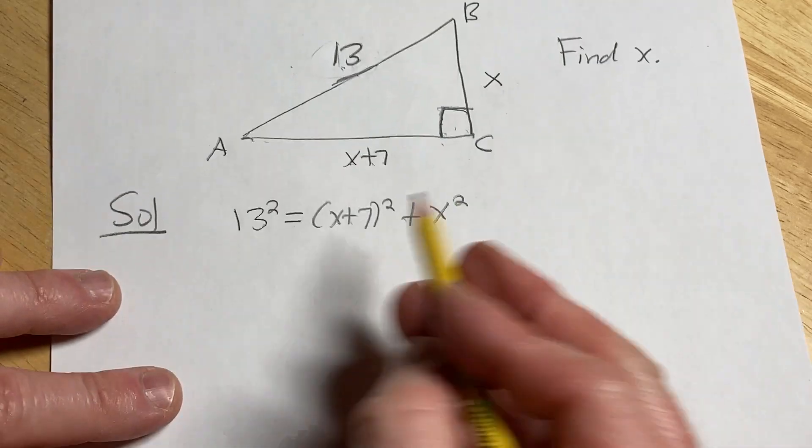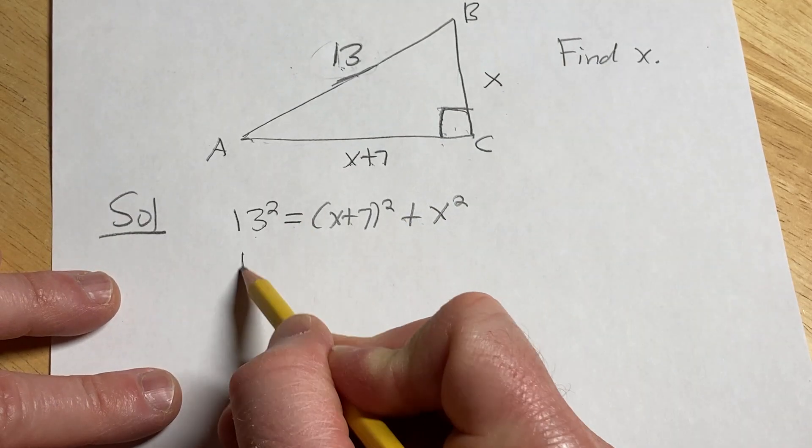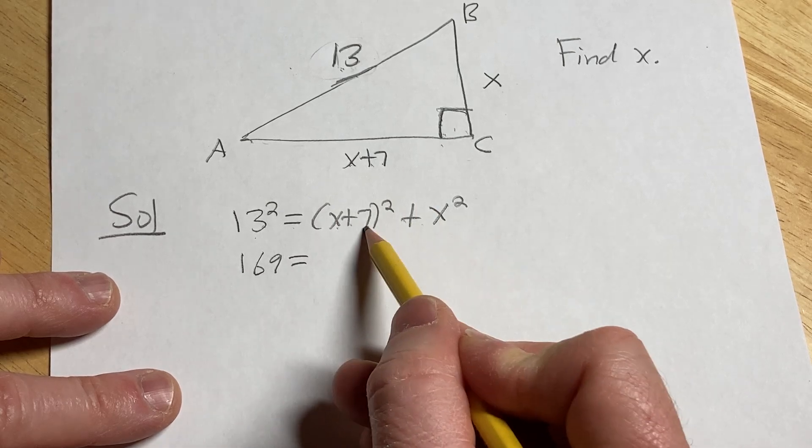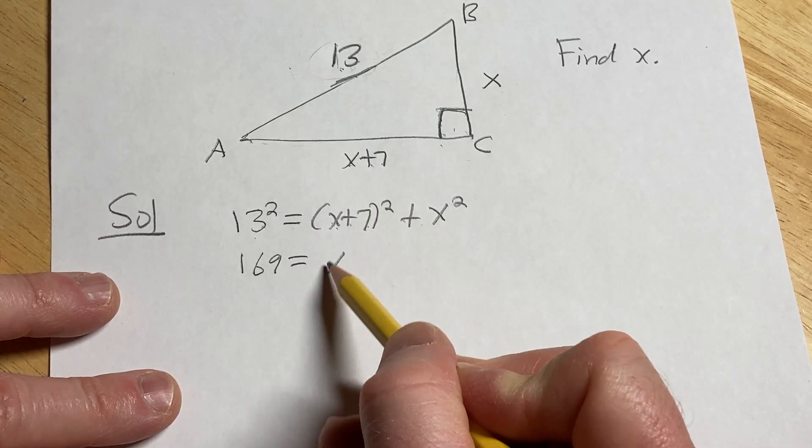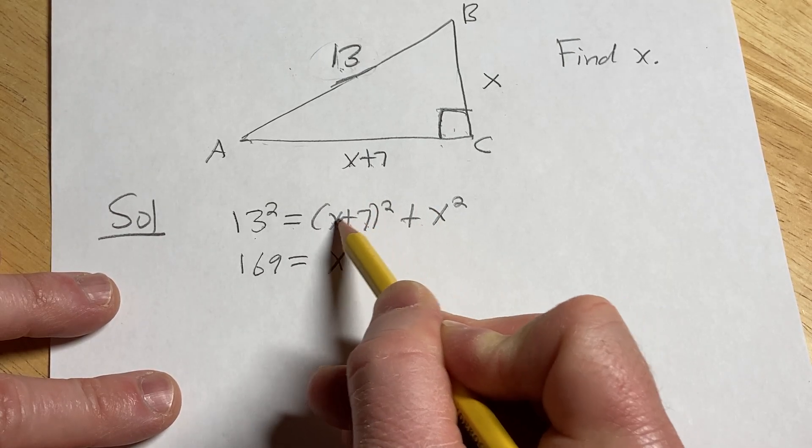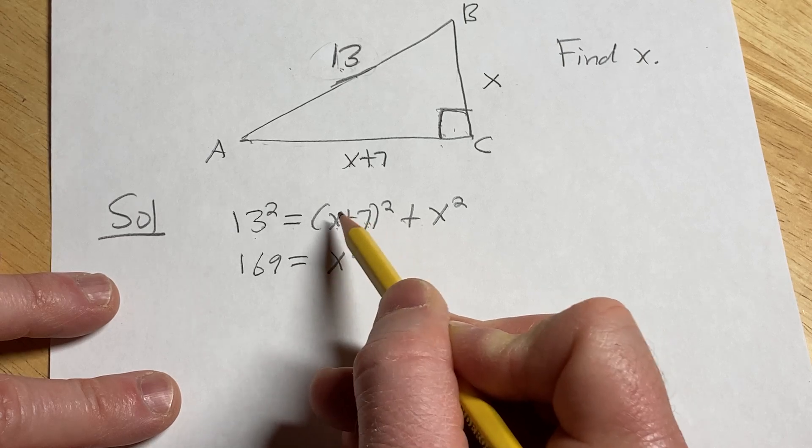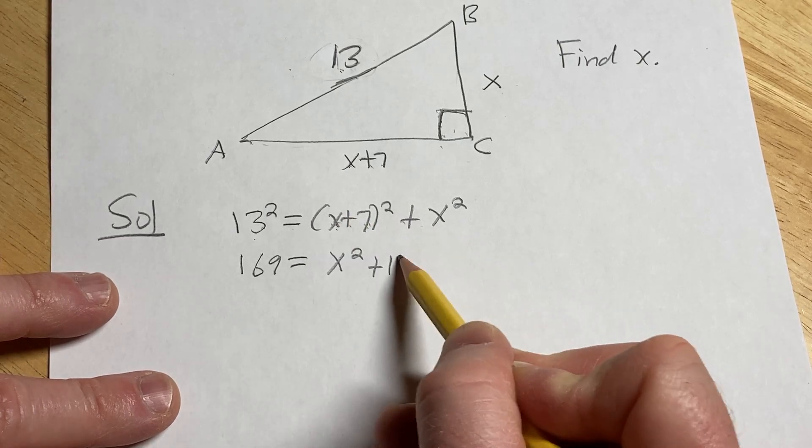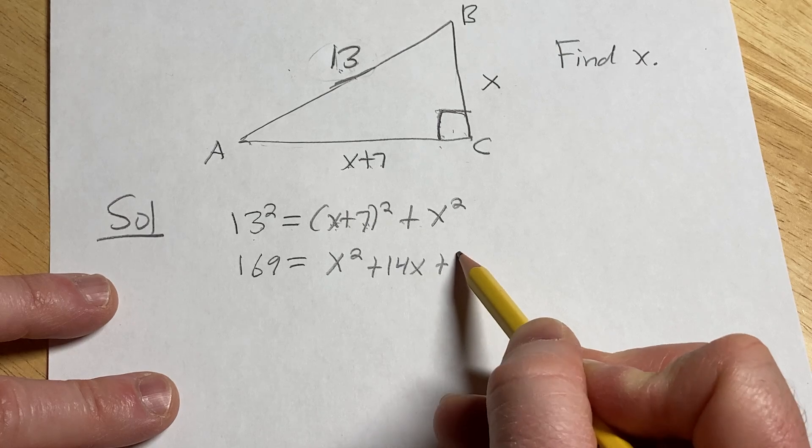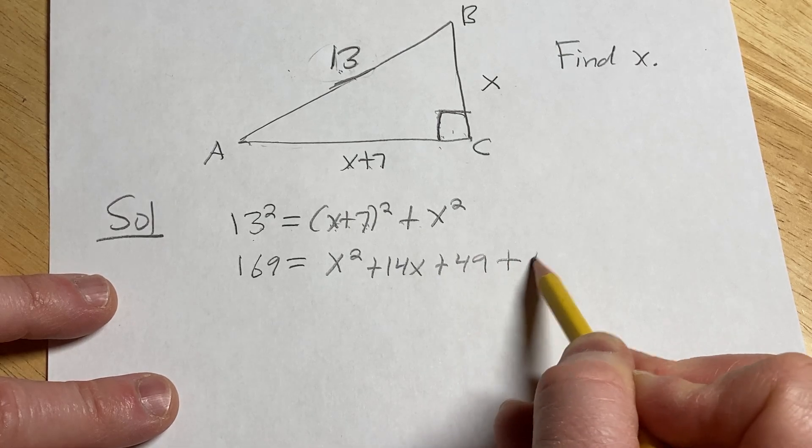Alright we can multiply this out, 13 squared is 169. There's a trick for multiplying this out: you square the first one, you multiply these and double them. 7 times x is 7x times 2 is 14x, you square the 7, 49, plus x squared.